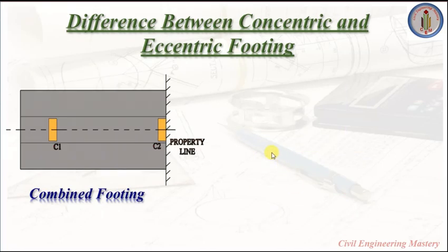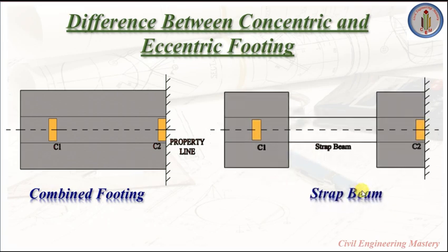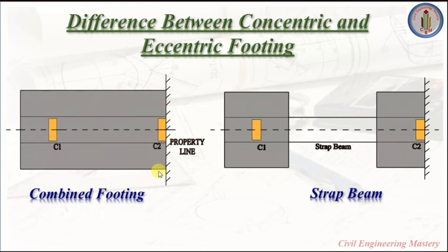How do we design the eccentric footing? One option is by providing a combined footing, and another is by providing a strap beam. Here is the property line — the column is located at the property line, which we call an edge footing. This edge footing can be combined with the adjacent concentric footing together to make a combined footing. Alternatively, this edge footing can be connected to the adjacent concentric footing by providing a strap beam.